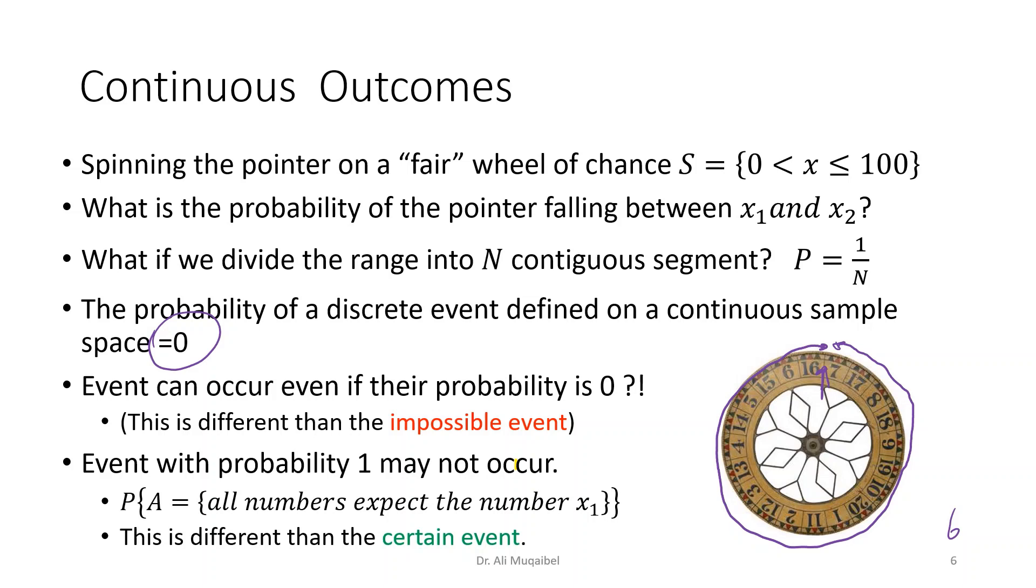And the remaining is one. But again, this event that has probability equal to one may not occur because the wheel could end up here. Again, this is different than the certain event, because if you say certain event, then it means it must occur.